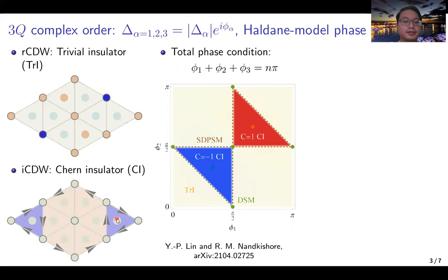Interestingly, we have the trivial insulator and the Chern insulators, which are continuous deformations from the purely real and imaginary orders. Between the gapped phases, we also have the gapless phase boundaries.